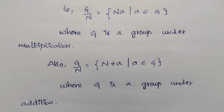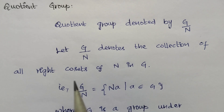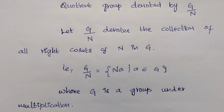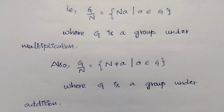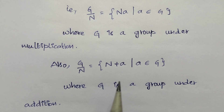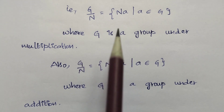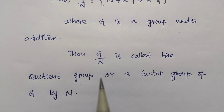Under this G/N notation, all elements are right cosets. So G/N equals the set of Na such that a belongs to G — this is when G is a group under multiplication. When G is a group under addition, the right cosets are of the form N+a, such as N+b, N+e, and so on. Then G/N is called the quotient group or factor group of G by N.